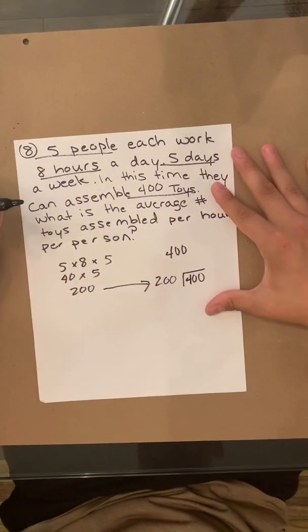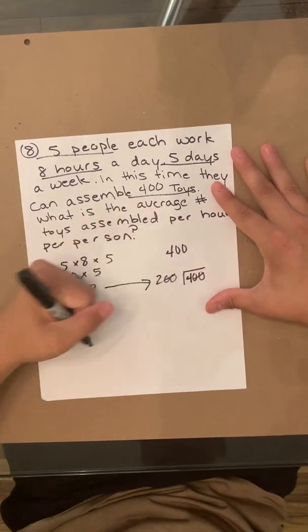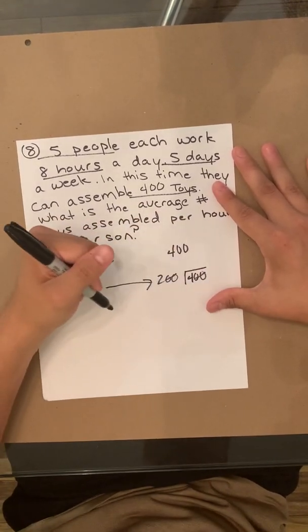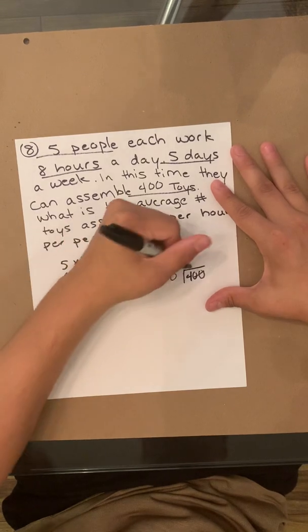One really quick way to make this simpler: get rid of the zeros, makes it complicated. What's four divided by two? It's two.